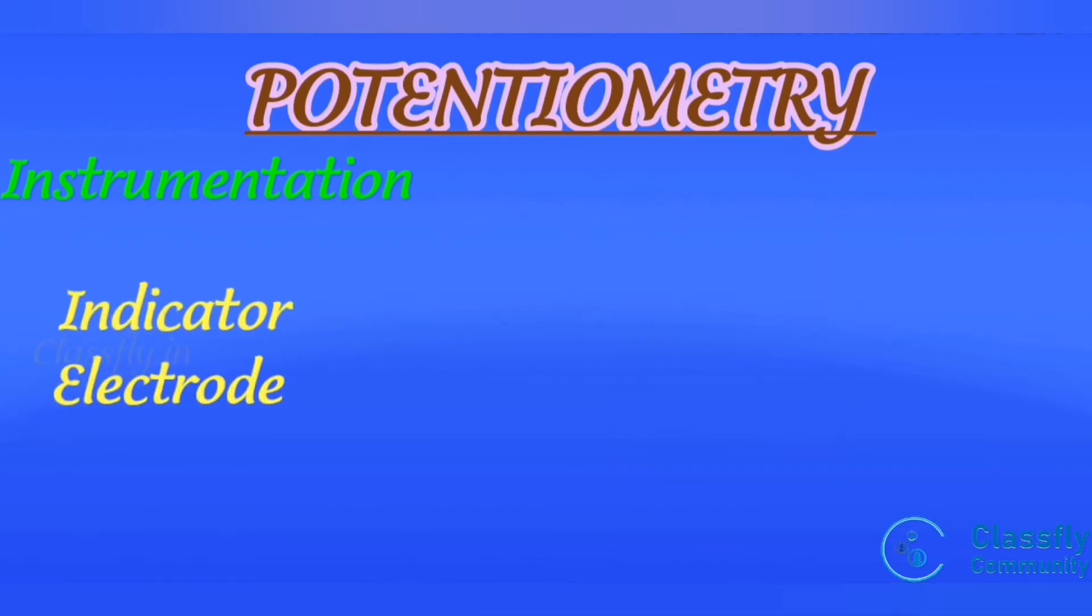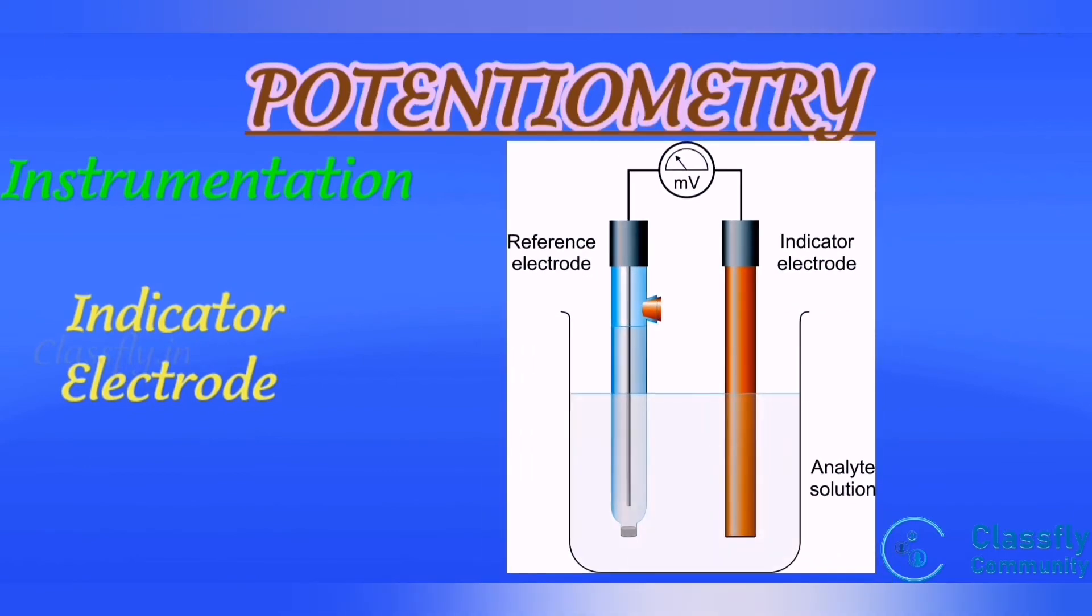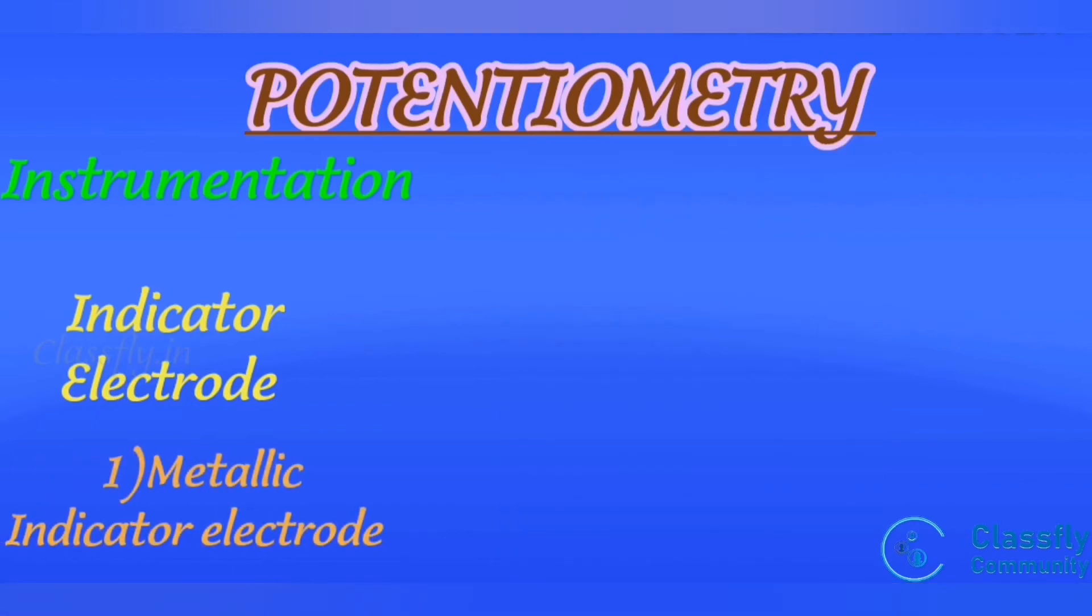Next, move on to the indicator electrode. It generates the potential that depends on analyte concentration. It is selective, rapid, and reproducible response. It contains three indicator electrodes. First one, metallic indicator. It contains mainly three metallic indicators: first one, electrode of the first kind.